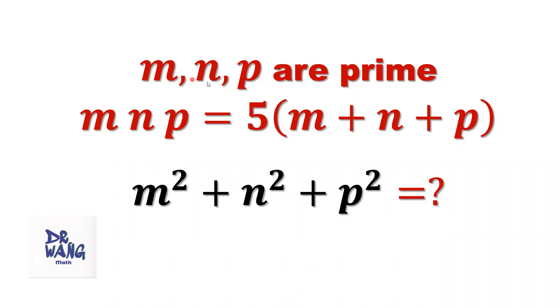If m, n, and p are prime, m times n times p equals 5 times m plus n plus p, what is the value of m squared plus n squared plus p squared?